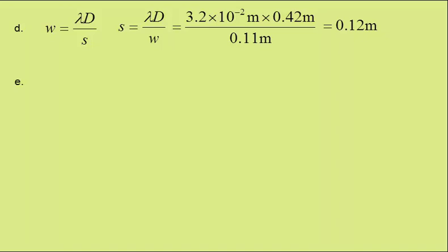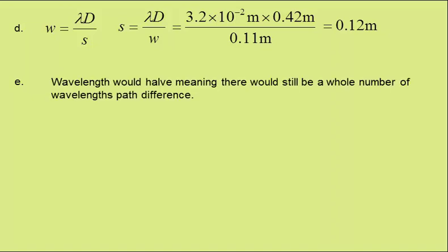In E, with the detector at the position of a maximum, the frequency is doubled. We're to state and explain what would now be detected in this position. Well, wavelength would halve, meaning there would still be a whole number of wavelengths path difference. Therefore, there would still be a maximum.